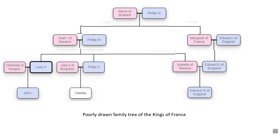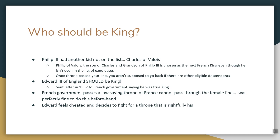The French system worked so that everything went down the line of the oldest child, and only men could be king — it could only be passed down through the male side. Philip III had a son named Philip IV. Philip IV had sons named Louis X and Philip V. Louis X had a son named John I, who dies. Then Philip V has a son named Charles, who dies before he can become king. The only living child of Philip IV is Isabella, who marries Edward II of England. Their child, Edward III, should be king according to the system, but the French didn't want an English king, so they blew up the entire system. Edward III got angry and started the war.